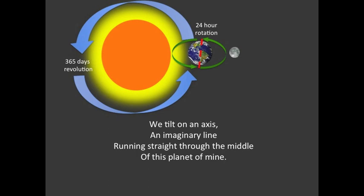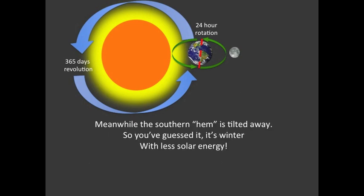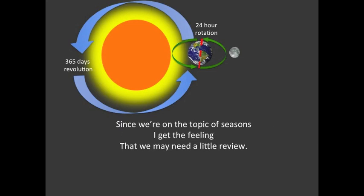Earth is busy getting dizzy, rotating — so much fun. We tilt on an axis, an imaginary line running straight through the middle of this planet. When the northern hemisphere is tilted toward the sun, it's summer, because it's getting more heat and light energy from the sun — that's why it's warmer in the summer. Meanwhile the southern hemisphere is tilted away, so it's winter with less solar energy.